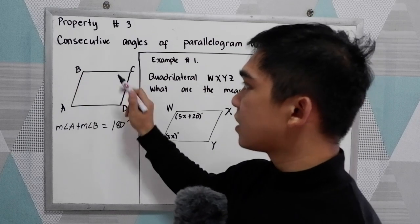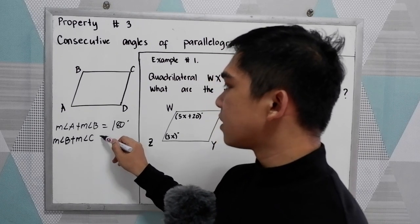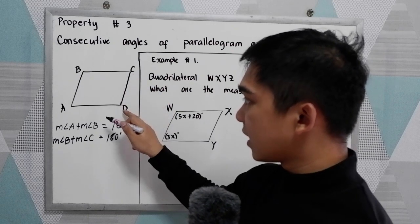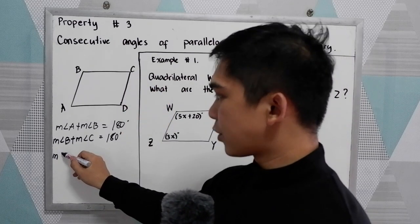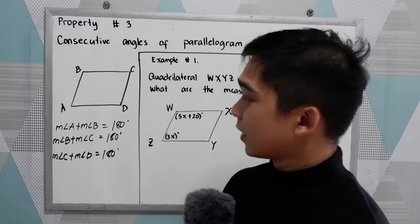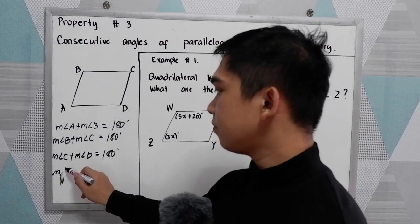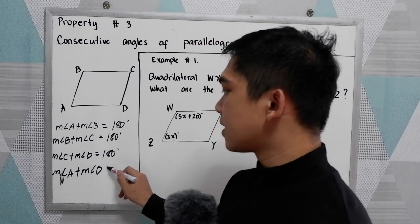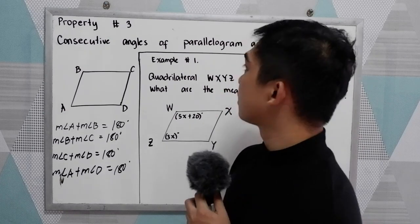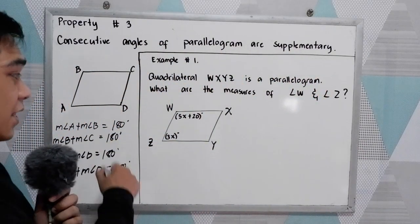Another pair of consecutive angles are B and C, so measure of angle B plus measure of angle C equals 180 degrees. We also have angle C and angle D: measure of angle C plus measure of angle D equals 180 degrees. And measure of angle A plus measure of angle D also equals 180 degrees. So all consecutive angles of a parallelogram are supplementary.